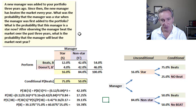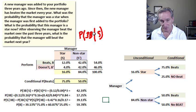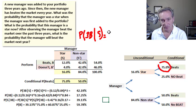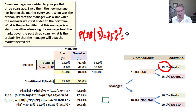To apply Bayes theorem we need a numerator and a denominator. The first thing we need is the conditional probability that a star beats the market three years in a row. Because performance is independent from year to year, we can simply cube the 75%, giving us the conditional probability that a star manager beats the market three years in a row: 75% cubed = 42.19%.